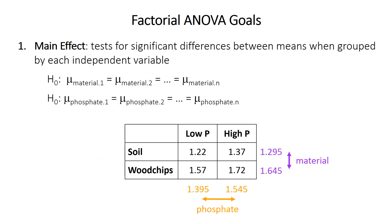Factorial ANOVA first tests for the main effects — whether there are significant differences between the means when grouped by each of the independent variables. In our example, this could ask whether the mean of soil differs significantly from that of wood chips, or whether the low phosphate mean differs significantly from the high phosphate mean. The null hypothesis is that the group means are not different from each other, or that they come from populations with the same mean.